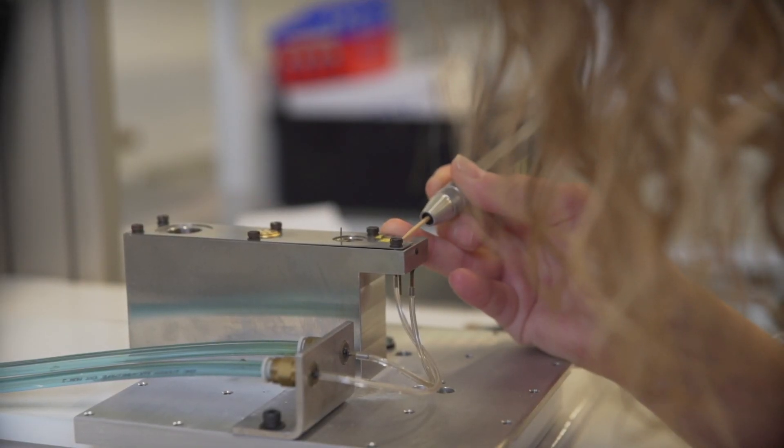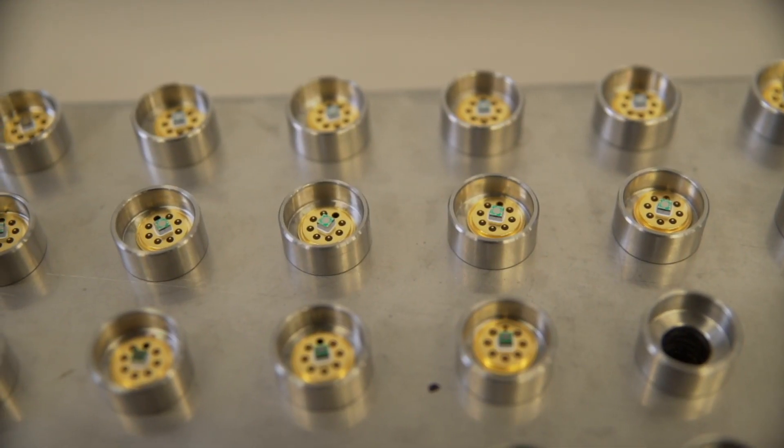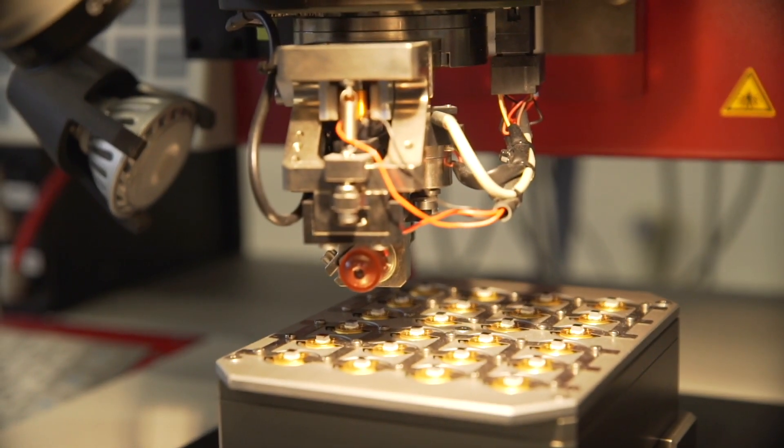The pressure sensor die is the element which converts pressure into an electrical signal. Pressure diffracts the membrane of the pressure sensor, and under this influence, the electrical signal in the pressure sensor die changes.